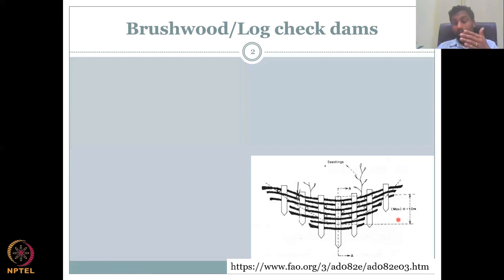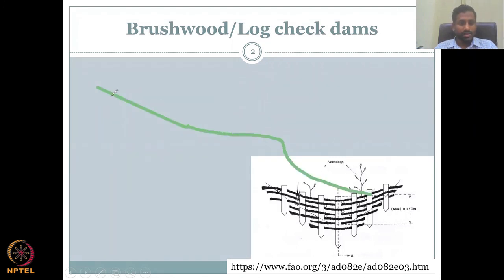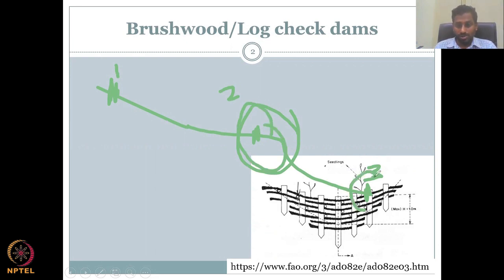These dams do not need to compensate downstream losses because water is still being released. In normal check dams, water is stopped completely. If you create check dams at multiple points along a stream, downstream positions get progressively less water because upstream dams are blocking it.